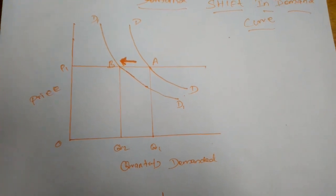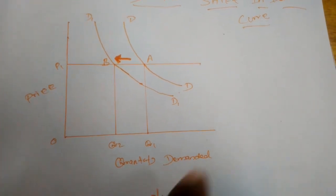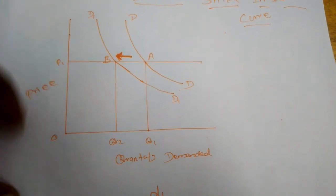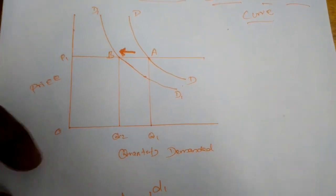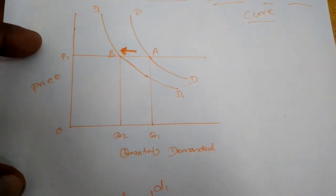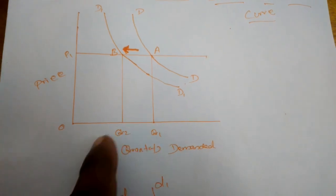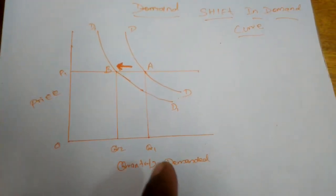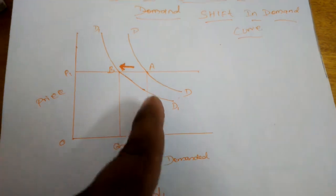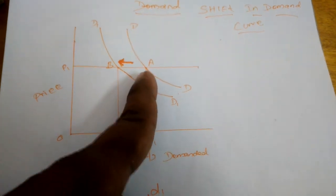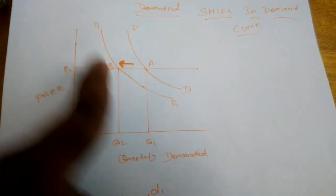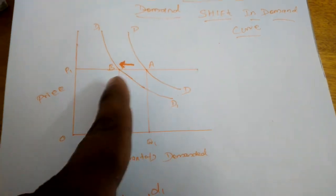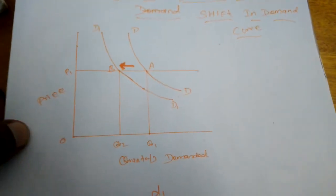Other conditions like weather and consumer preferences can also cause a shift. Because the price has not changed, but if the demand curve changes, that is called a shift in the demand curve. So the demand curve shifts from point A to point B.